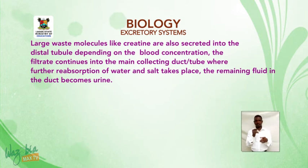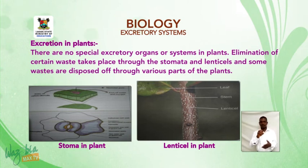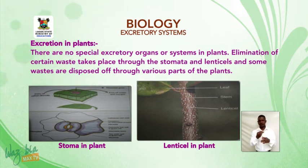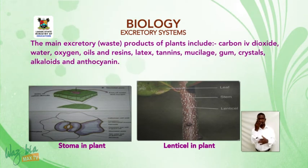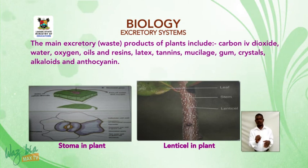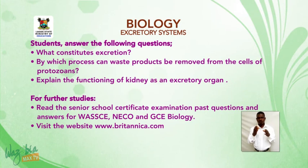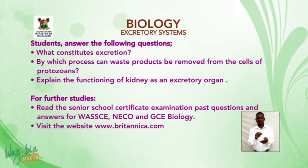There are no special excretory organs or systems in plants. Elimination of certain waste takes place through the stomata and lenticels, and some waste is disposed of through various parts of the plant. The main excretory waste products of plants include carbon dioxide, water, oxygen, oils and resins, latex, tannin, mucilage, gum, crystals, alkaloids, and anthocyanins.